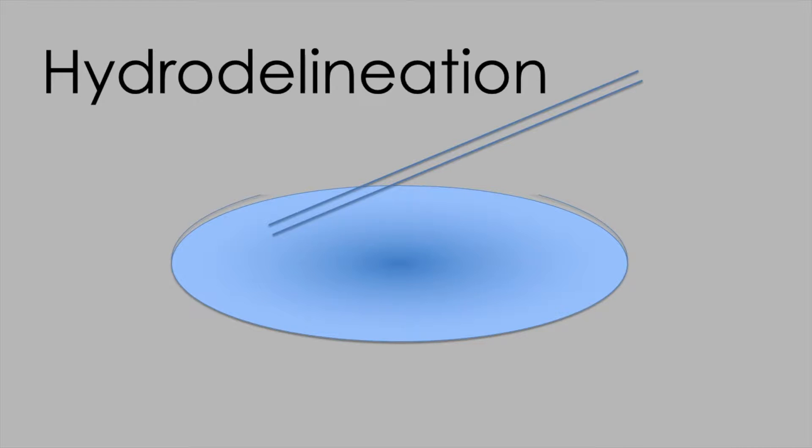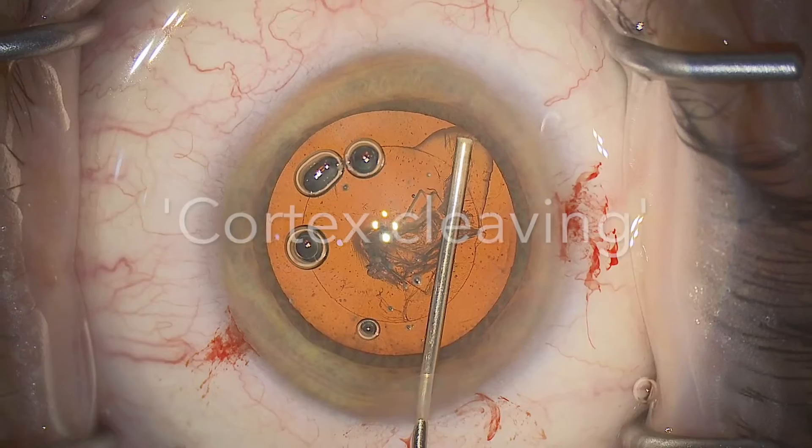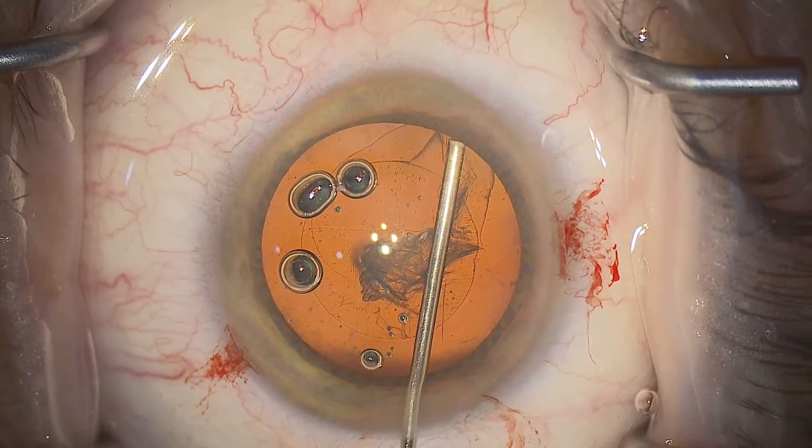Most of us are no longer using what was called hydrodelineation, in which you deliberately inject into the lens to make the nucleus smaller. This is still used in manual small incision cataract surgery but not in phacoemulsification. Instead, the aim is just to tease up the anterior capsule before you hydrate the cortex with any fluid injection.